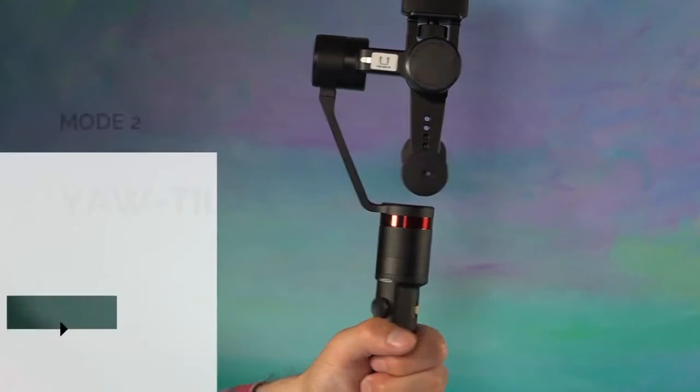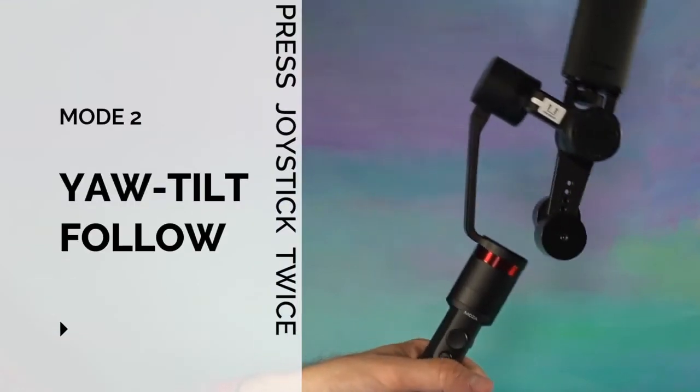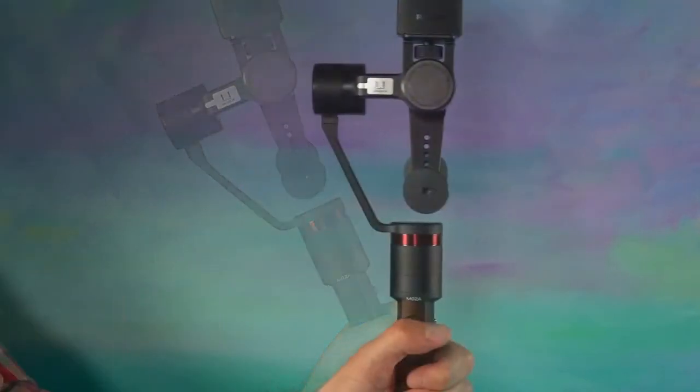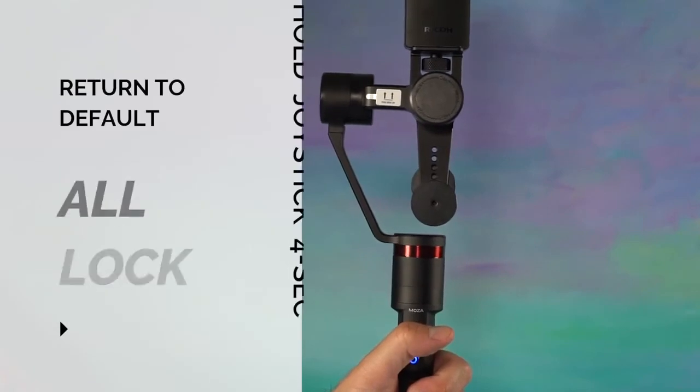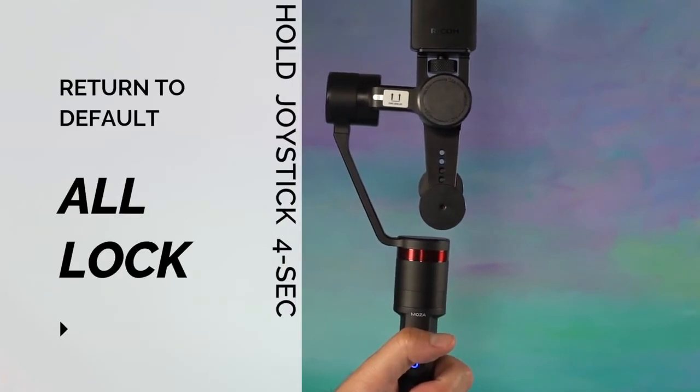The third mode is accessed by pressing the joystick two times for yaw and tilt follow mode. And all lock mode is accessed by pressing the joystick for four seconds.